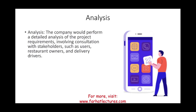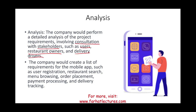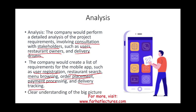After planning comes the analysis stage. The company performs a detailed analysis involving consultation with stakeholders, users, or potential users — such as customers of local restaurants, restaurant owners, and delivery drivers. We survey them to understand needs. Then the company creates a list of requirements for the mobile app, such as user registration, restaurant search, menu browsing, order placement, payment processing, and delivery tracking. At this point, we have a clear understanding of the big picture — we've just analyzed, not built anything yet.